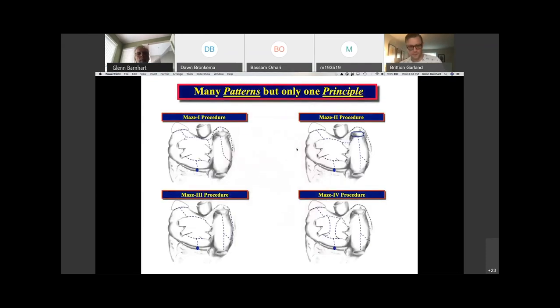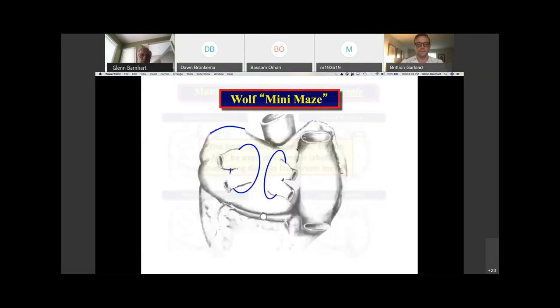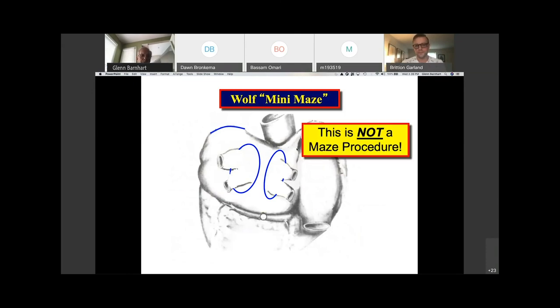So there are many patterns to the maze procedure, but only one principle. And so the maze procedure really should not be used as a generic label for anything done in the atrium. And unfortunately today that still goes on. If somebody does something in the atrium, they call it a maze procedure. It is not the case. This is an example, so-called Wolf Mini Maze. This is not a maze procedure. Basically, it's a pulmonary vein isolation and a clip on the left atrial appendage.